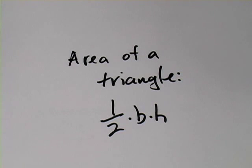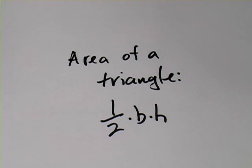The formula for the area of a triangle is one-half the base times the height, and that's a good one to remember. So to help you remember it, I'm going to show you where that formula comes from.